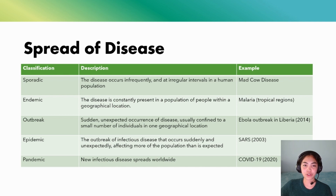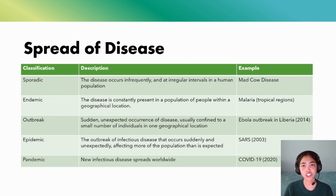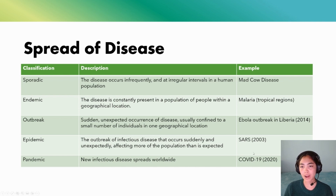An outbreak is something that's a sudden occurrence of a disease, but it is confined to a small number of individuals and a particular geographic location. The Ebola outbreak that happened in Liberia in 2014 was in the news quite a bit when that occurred.